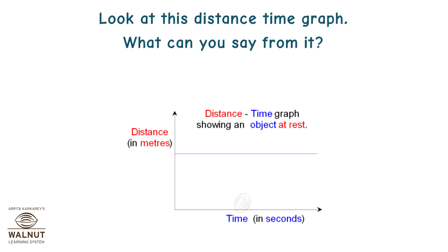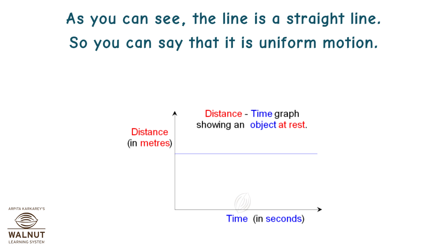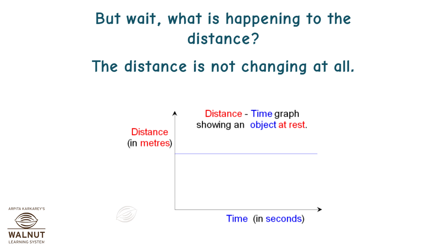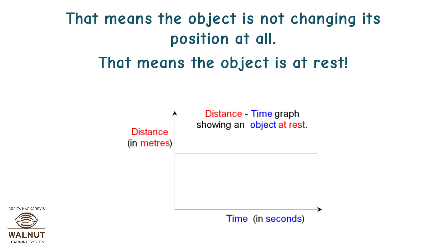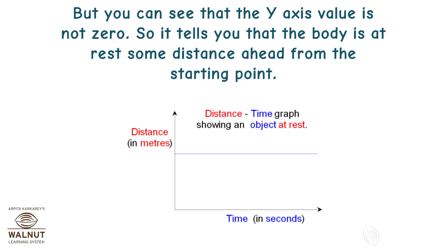Look at this distance-time graph. As you can see, the line is a straight line, so you can say it is uniform motion. But wait — what is happening to the distance? The distance is not changing at all. For any moment of time, the distance is the same. That means the object is not changing its position at all, meaning the object is at rest. But the y-axis value is not zero, so it tells you that the body is at rest at some distance ahead from the starting point.